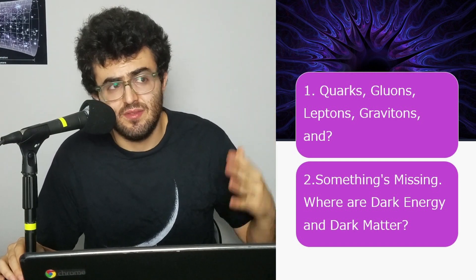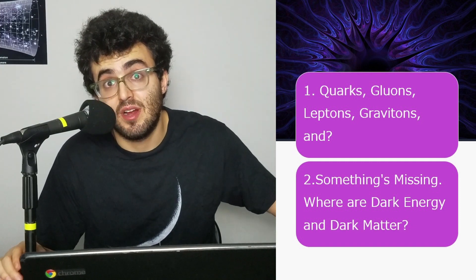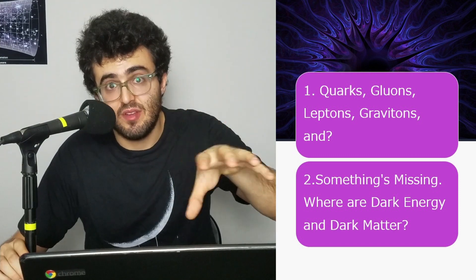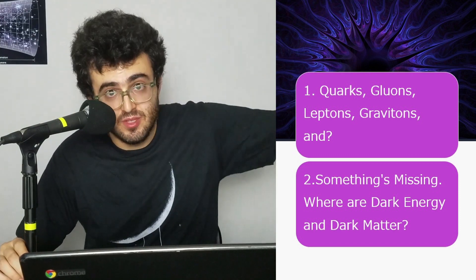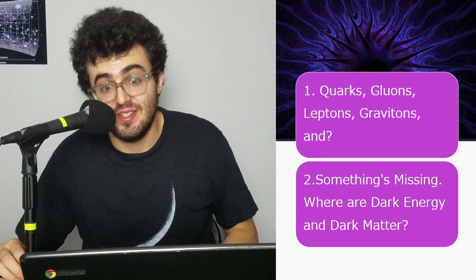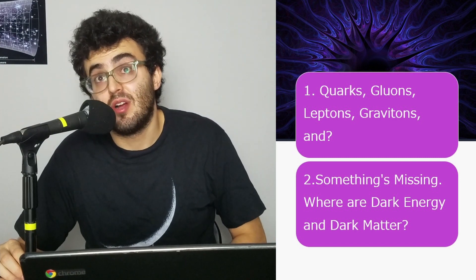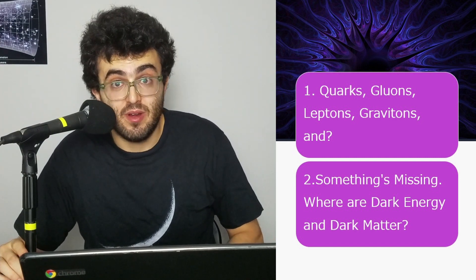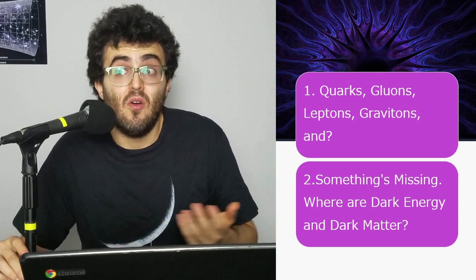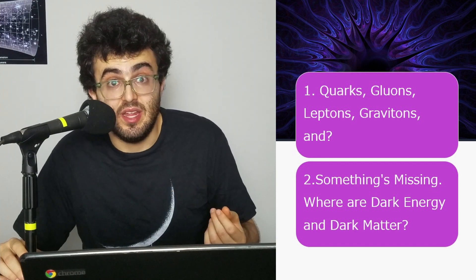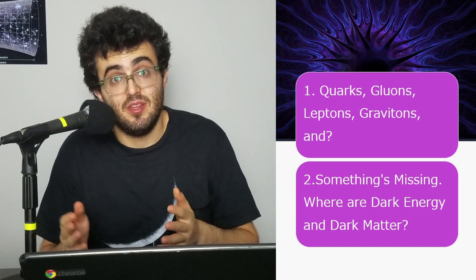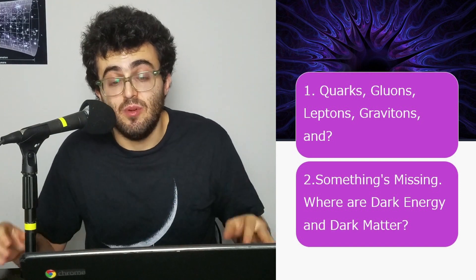There are two things missing from this model, and they're also missing from the standard model of particle physics more broadly: dark matter and dark energy. As for dark matter, it may well have come at this period too — dark matter may also be something that decayed from the inflaton field, placing its birth at 10 to the minus 33 seconds. However, dark energy is more complicated. It may have been there beforehand as a feature of space, or part of the inflaton field that didn't decay, or perhaps it decayed from the inflaton field. Dark energy is much more ambiguous and we don't really know when it came to be.